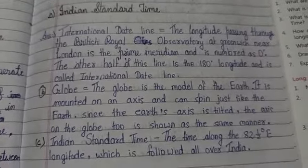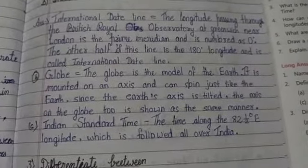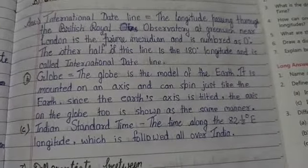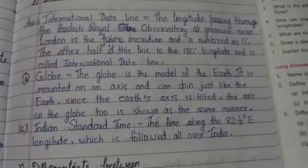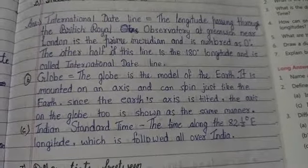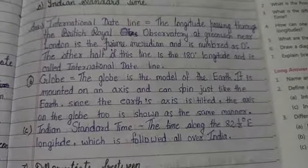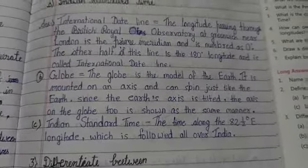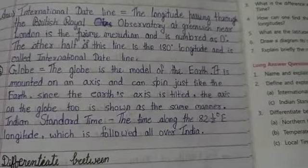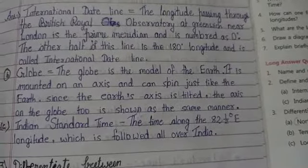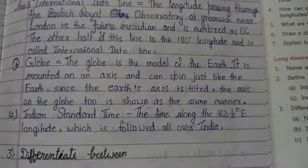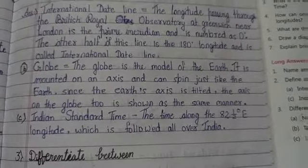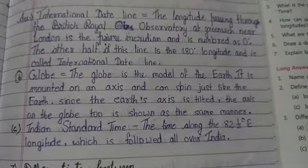Indian Standard Time is the time along the 82.5 degrees East longitude, which is followed all over India. This ensures a uniform time across all of India. This longitude passes through Mirzapur, near Allahabad.